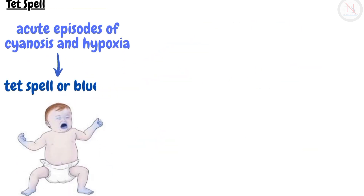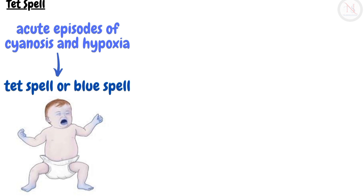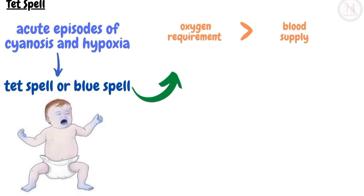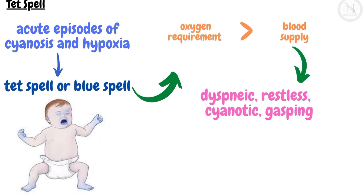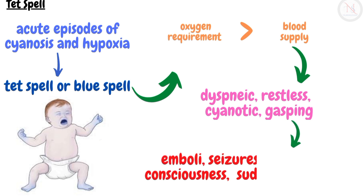There may be acute episodes of cyanosis and hypoxia called blue spells or tet spells. These spells occur when an infant's oxygen requirement exceeds the blood supply, usually during crying or after feeding. The infant becomes dyspneic, restless, and cyanotic, and may even gasp for breath. Patients are at risk of emboli, seizures, loss of consciousness, or sudden death after a tet spell.